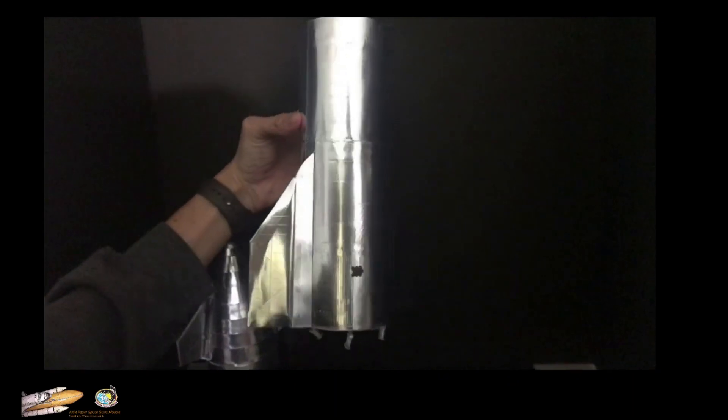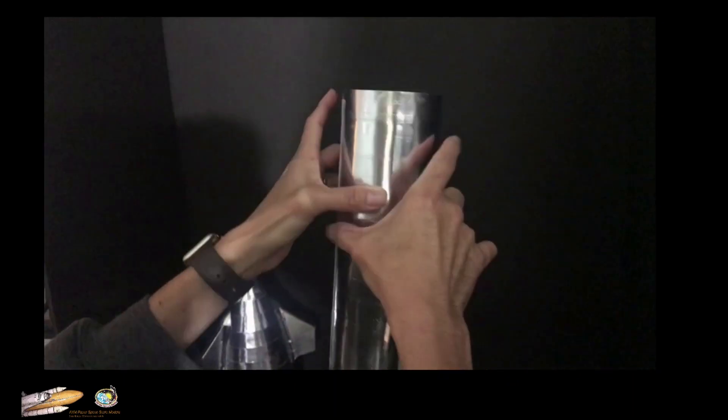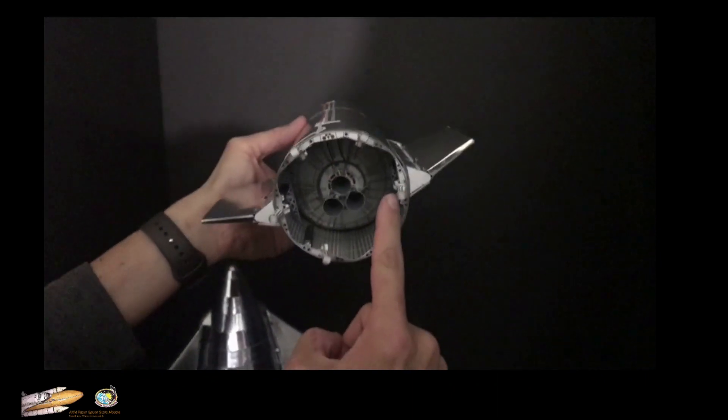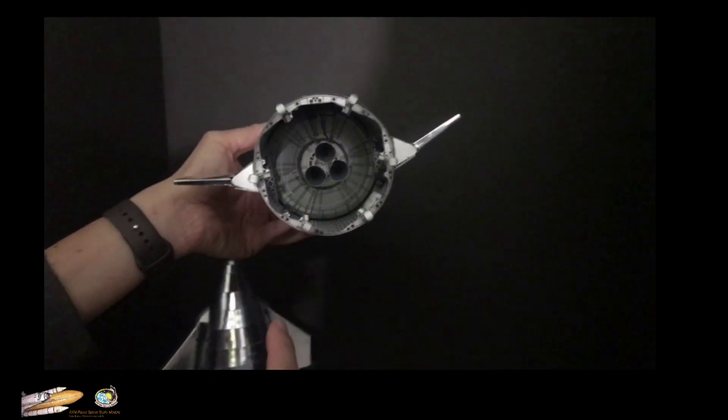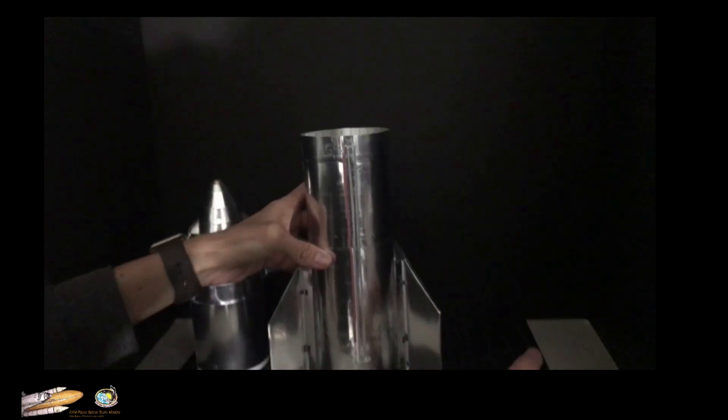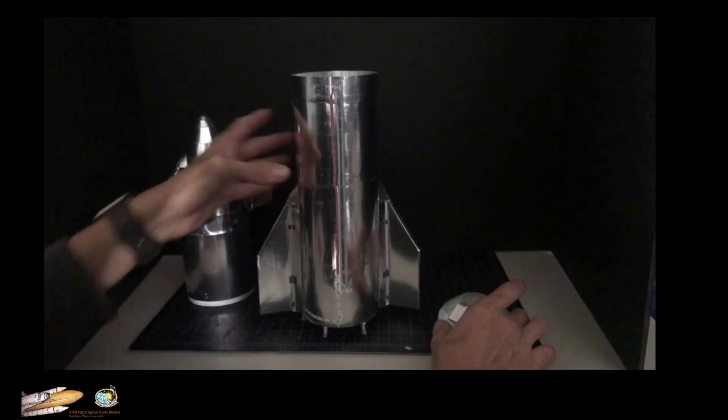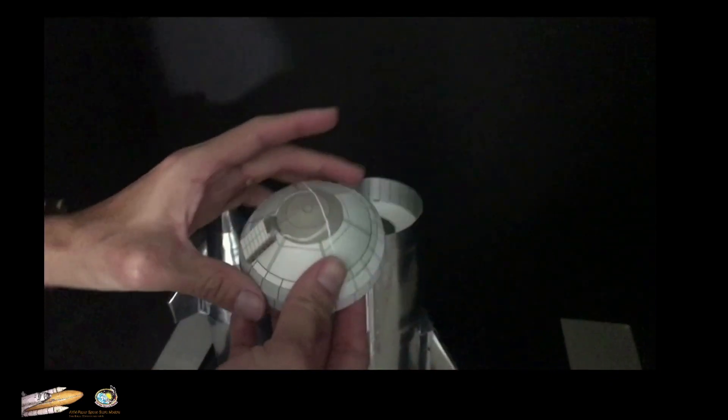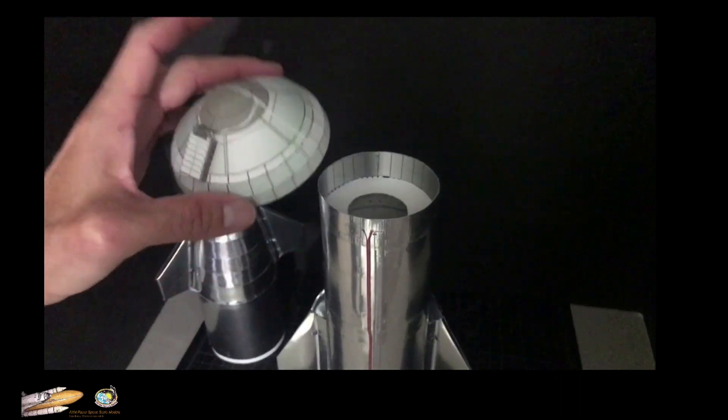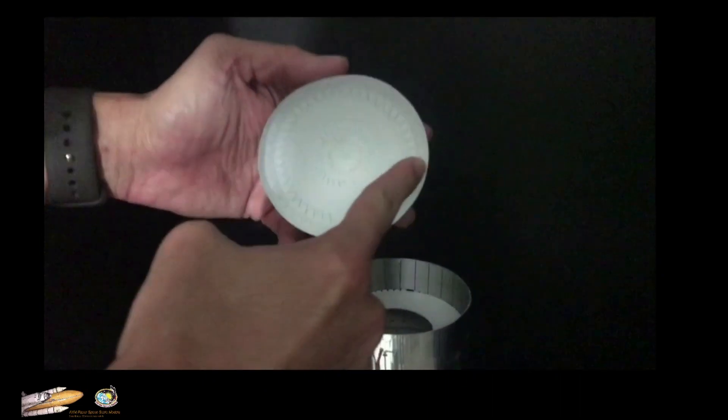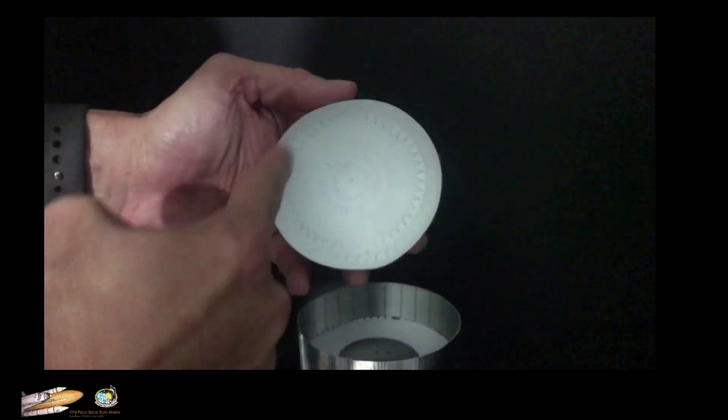This is the half body of the SN8, already completed with the wings and legs. Now I'm going to place the upper dome. You just have to put glue on this side, on the inside of the upper dome.